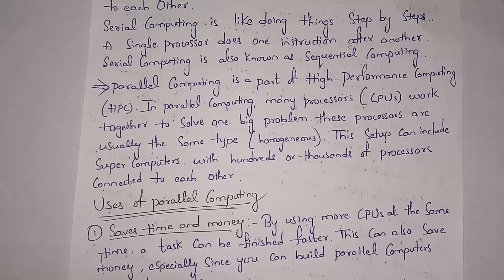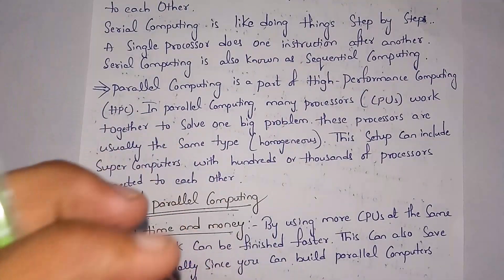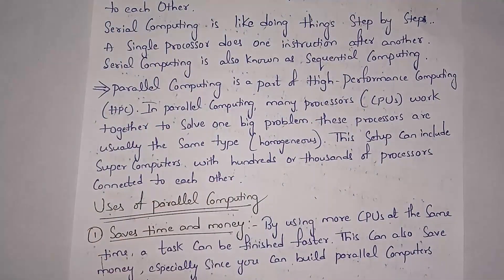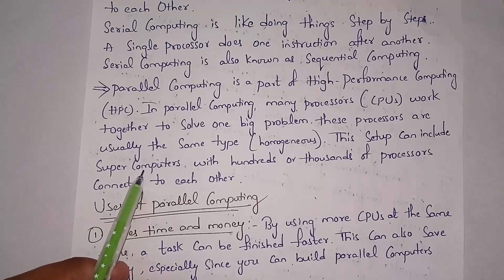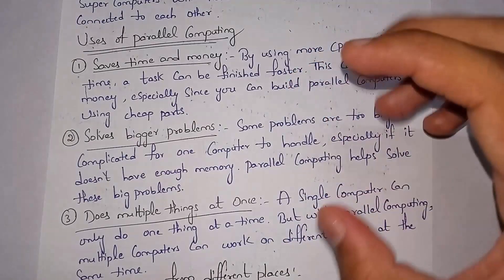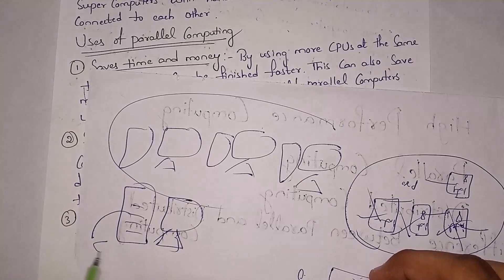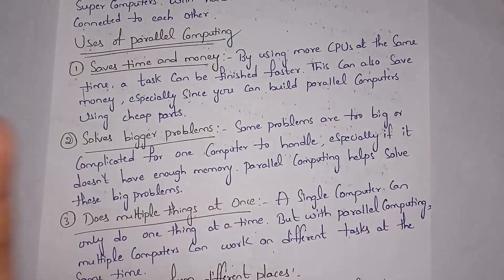In parallel computing we use multiple processors that work together to solve one big problem, and all these processors are of the same — homogeneous — type. One example is supercomputers, which have thousands of processors connected together. Using parallel computing saves time and money: work completes faster, and instead of purchasing multiple computers you can purchase a single computer with multiple processors.